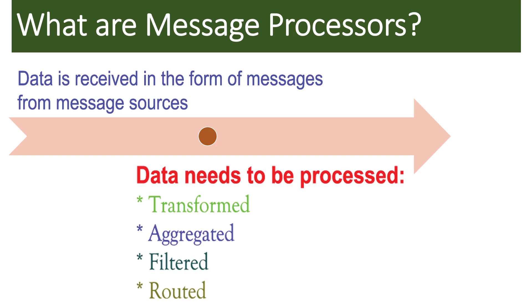Once messages are received in your integration flows, the data needs to be processed in different ways depending on the business requirement — depending on what kind of data you are receiving and what kind of data is required for the downstream system. It may need transformation, aggregation, splitting, or filtration before you process it and make it available to the downstream system.